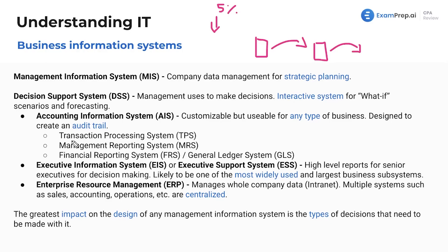The transaction processing system just processes the transactions that a company may conduct on a day-to-day or weekly basis. Under there, we've got management reporting system — management just reporting, literally anything, just knowing that these are under the AIS. Financial reporting system — this can generate the financial statements. And general ledger system — this is where you enter your journal entries. All of these have audit trails so you can see who entered what and when they entered it. You can hopefully track down any falsified journal entries. This is super important.